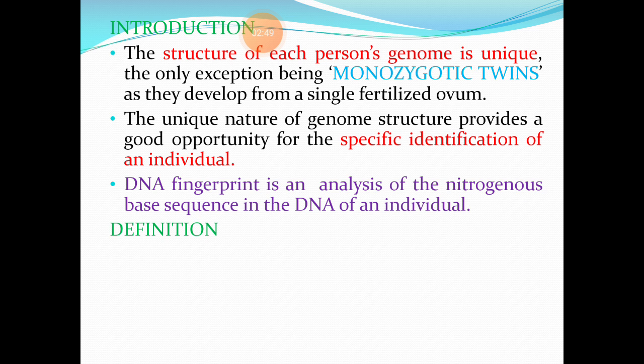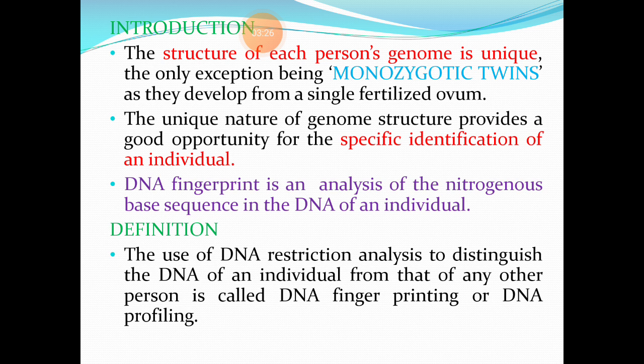DNA fingerprinting is an analysis of the nitrogenous base sequence in the DNA of an individual. All of us have DNA in the cell, and DNA is made up of four nitrogenous bases: A, T, G, and C. Ultimately, the nitrogenous base sequence analysis gives you the DNA fingerprint of a particular individual.